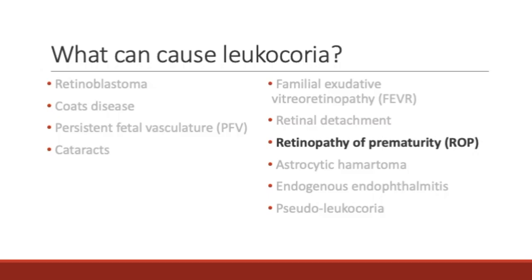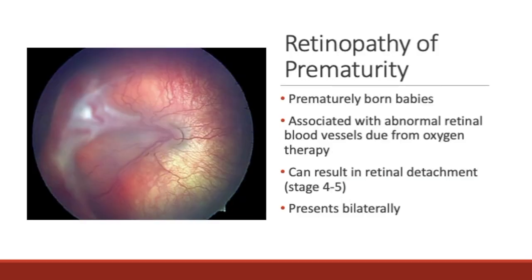In retinopathy of prematurity, as the name suggests, this occurs in prematurely born babies. It is associated with the development of abnormal blood vessels in the retina that can progress to retinal detachment in severe cases. In the photograph to the left, you can see a retinal detachment along with proliferation of abnormal blood vessels throughout the retina.